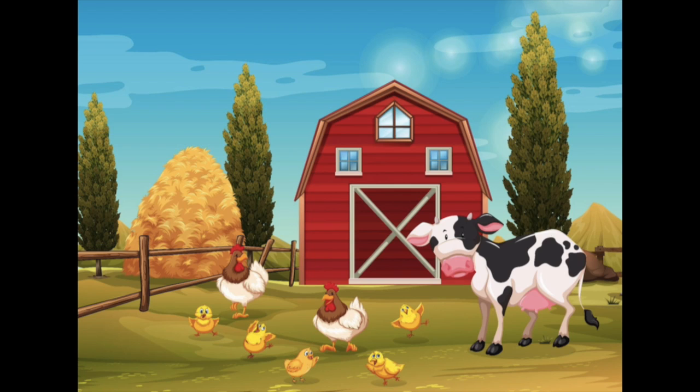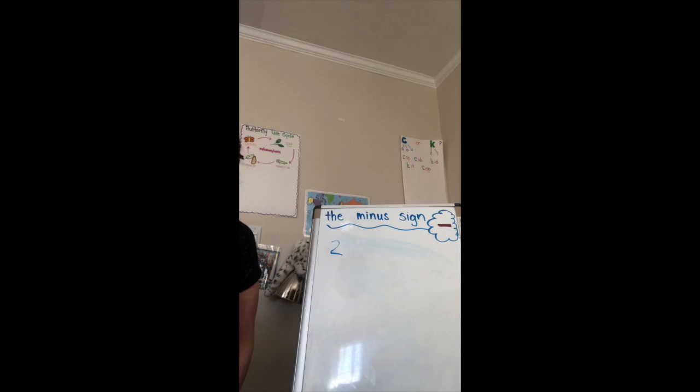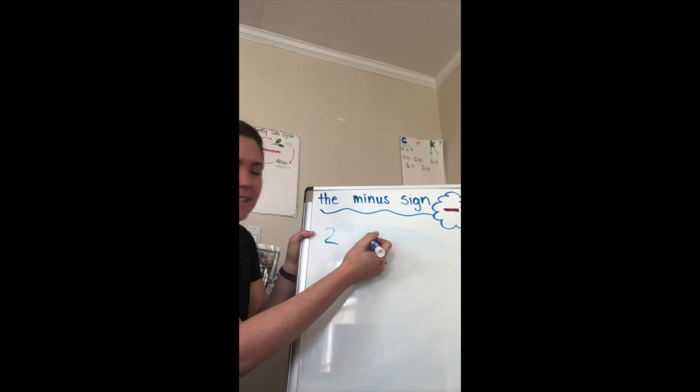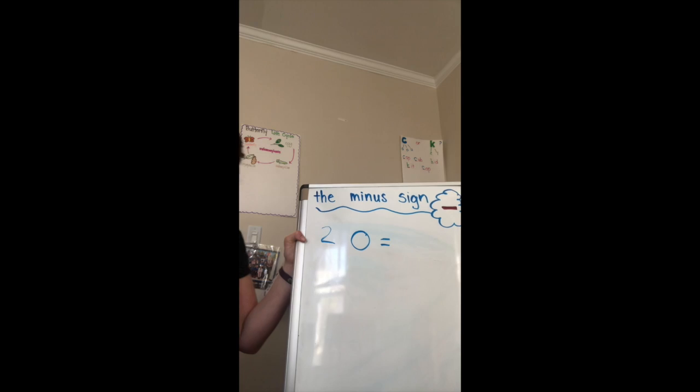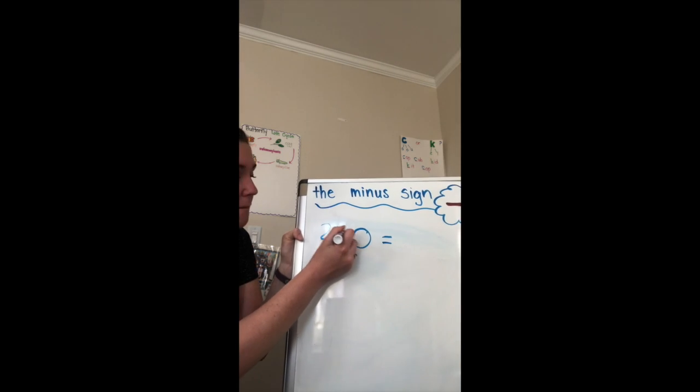Let's do one more using our math talk picture. I see that there are two hens. And the hens decided to stay. So no hens, zero hens left. How many hens are still there? Since we're talking about subtracting, we have to use our minus sign.